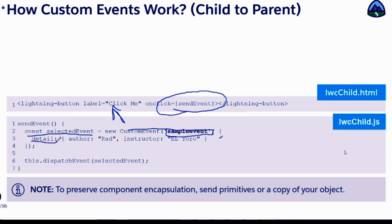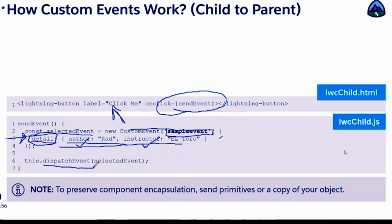In the JSON, there is a property called detail. The detail has to be named as 'detail' only — no other way. In detail, we can pass information such as author and instructor. So we are passing these two pieces of information again as a JSON, and the JSON object name is detail. This is fixed; we can't change that. Once the event is created with the value you want to pass, you have to dispatch the event — trigger it. You call dispatchEvent from the current component.